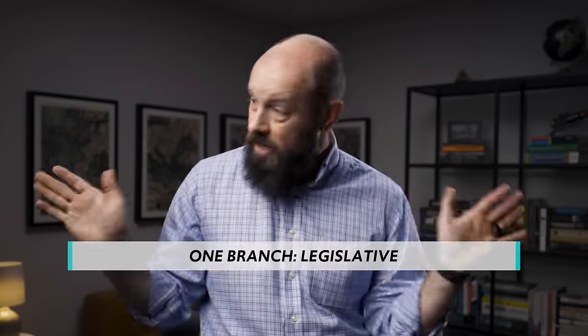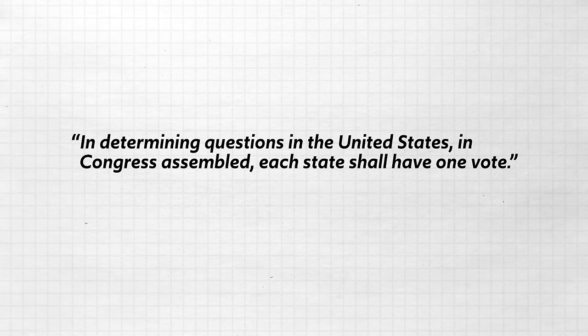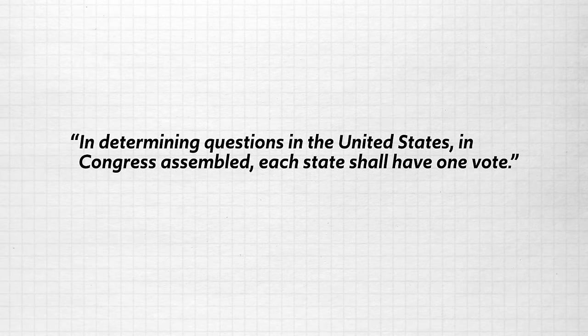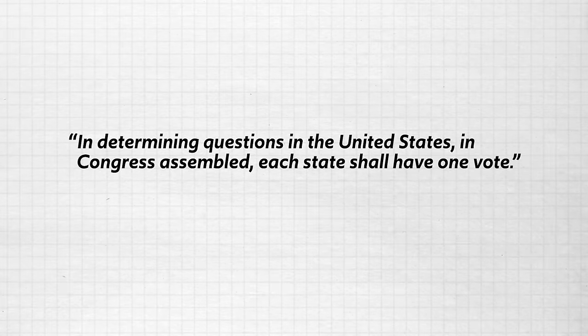Once we get to Article 5, we begin to see the provisions for the federal government. The article established a single branch of the federal government — namely a legislative branch. No president, no federal court. And how is that federal Congress going to operate? Further along in Article 5 it says, 'In determining questions in the United States in Congress assembled, each state shall have one vote.' In other words, representation in Congress is equal among the states — a small state like New Hampshire has exactly the same amount of power as a gigantic state like Virginia.